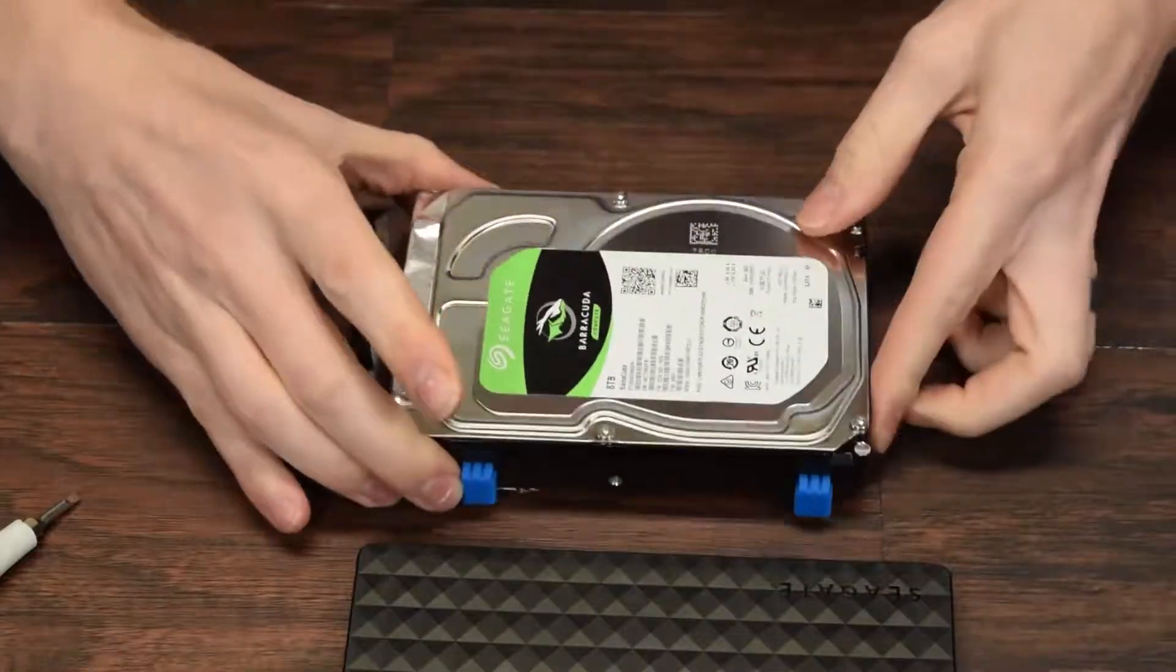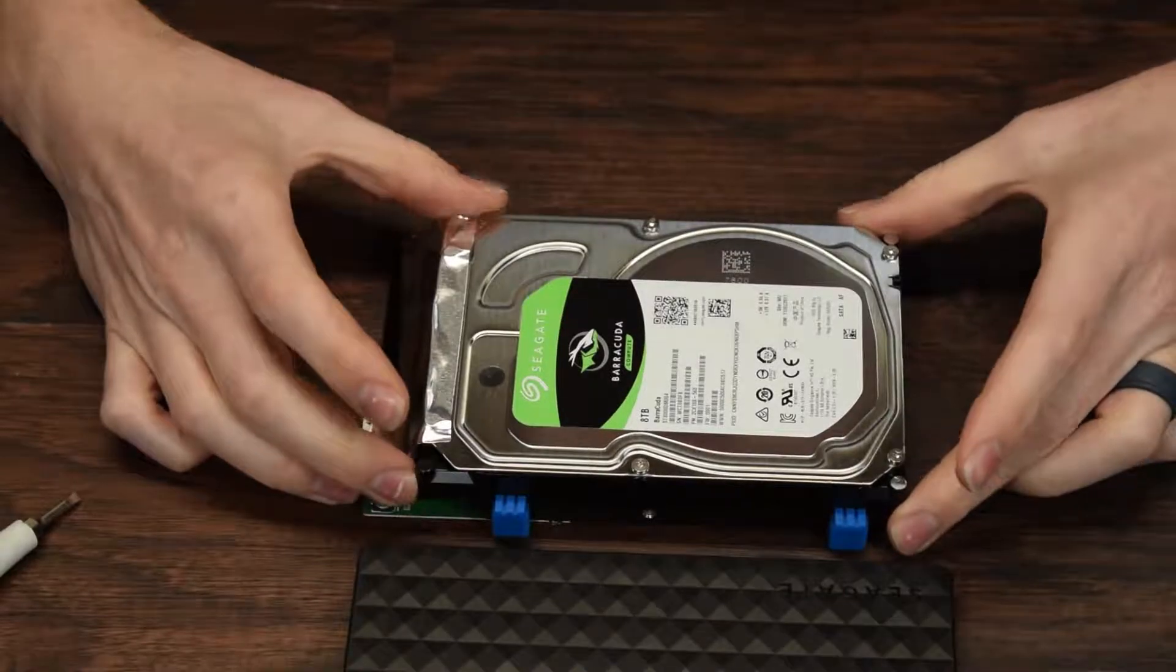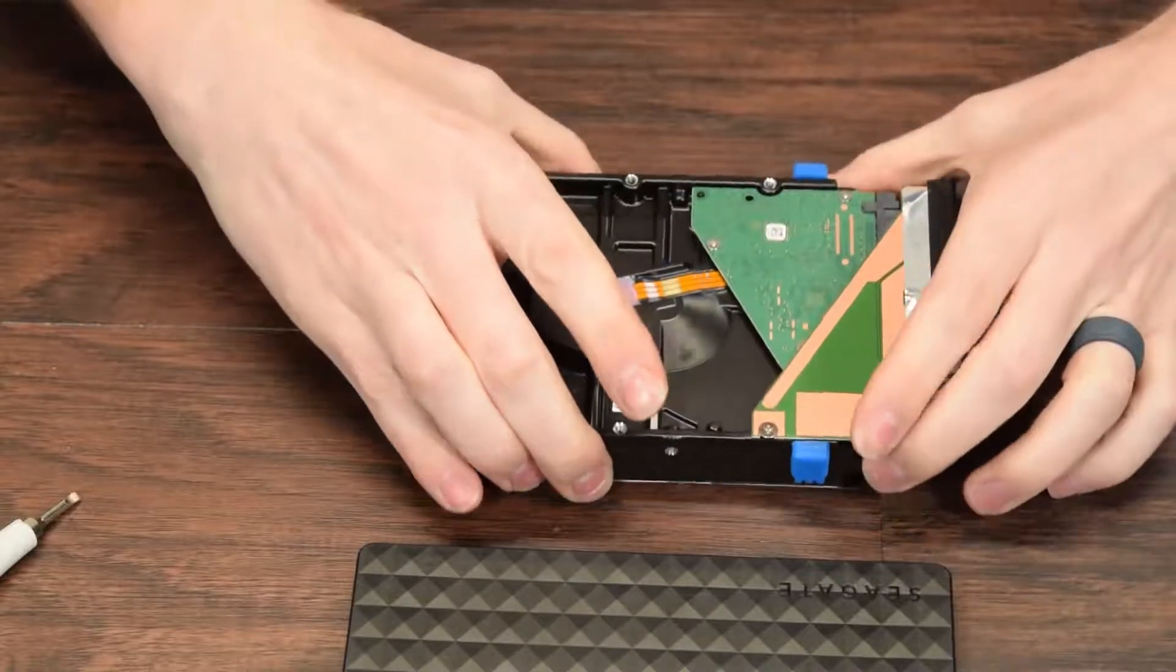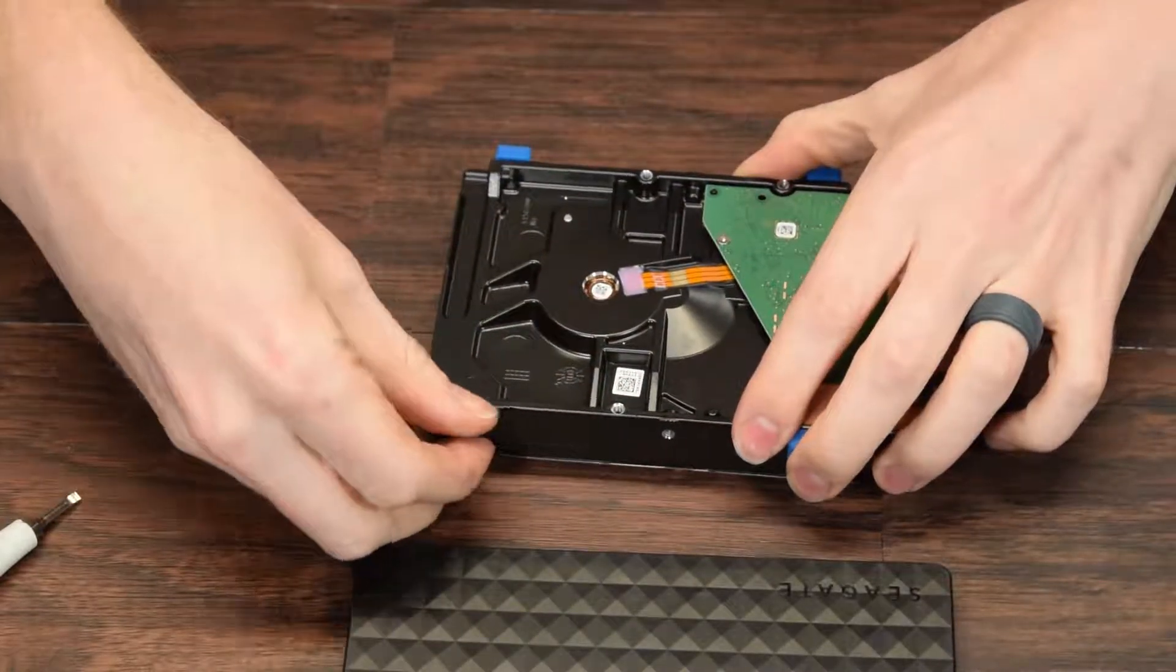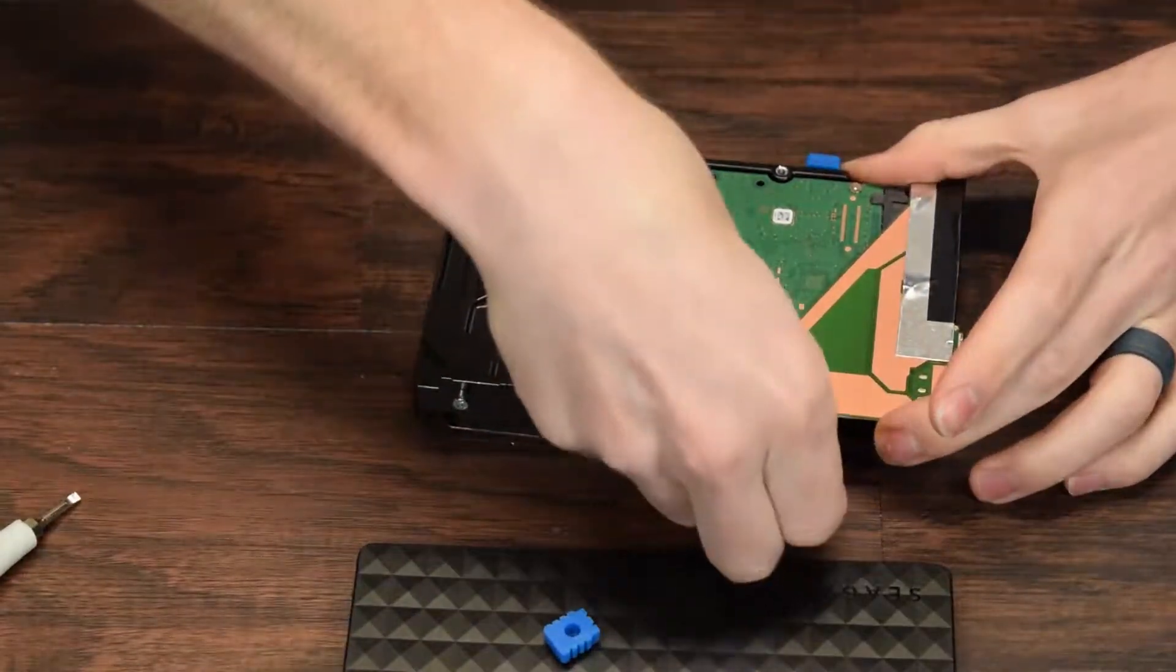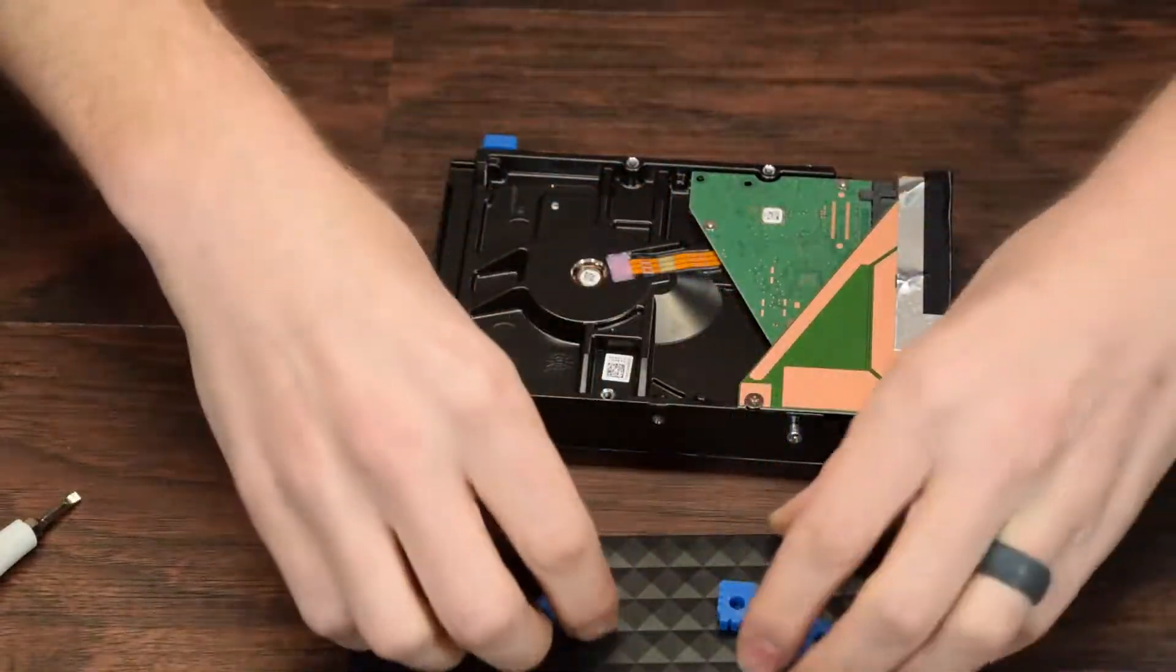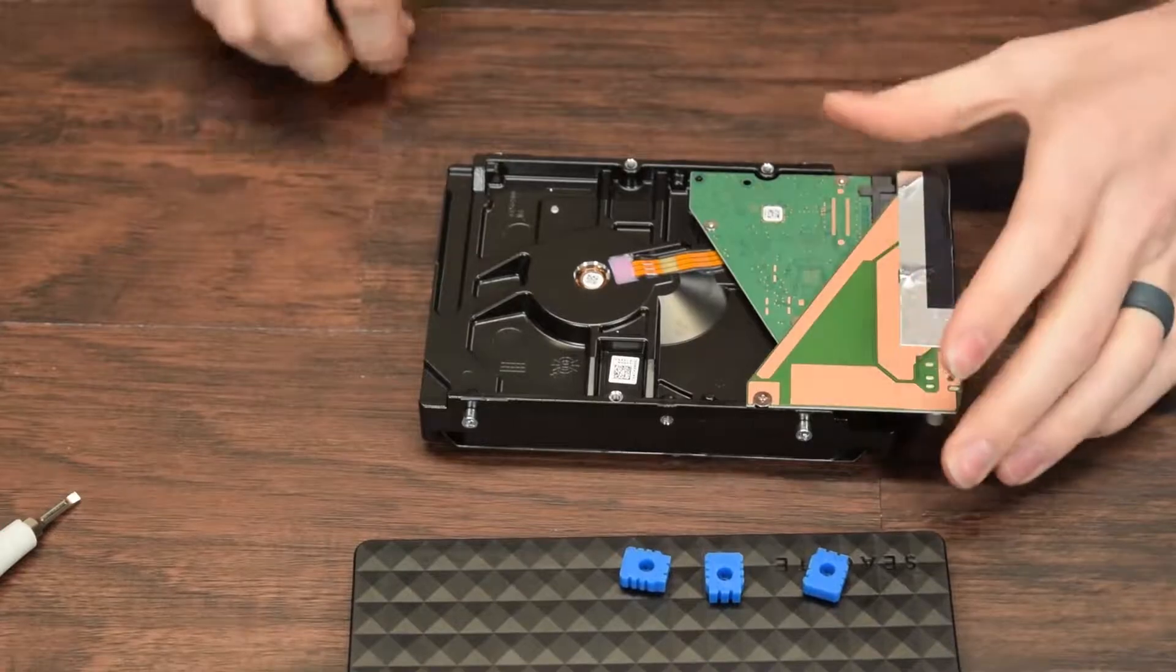We have a standard Seagate Barracuda 8TB unit, 3.5 inch. There are little rubber doodads that hold it immobilized in the case. They're just little gel squishy things. Kind of neat.